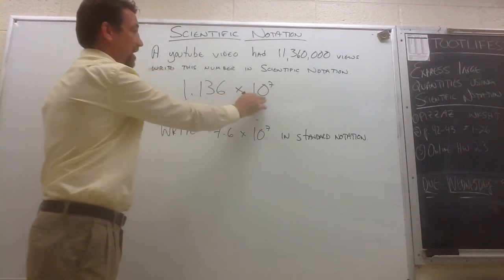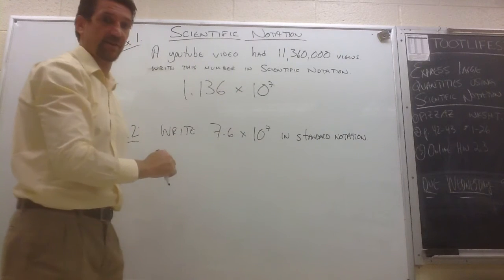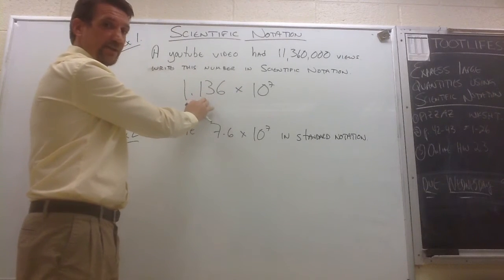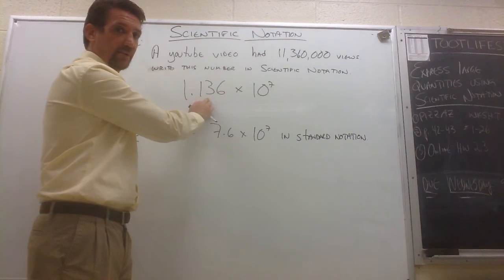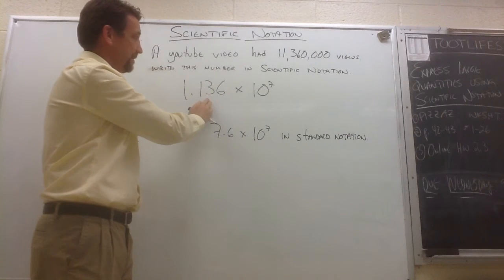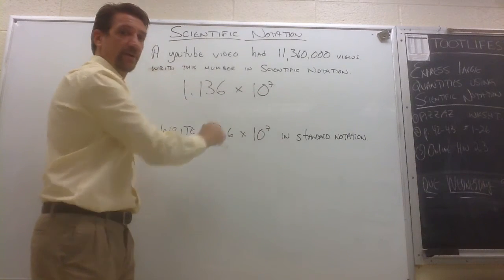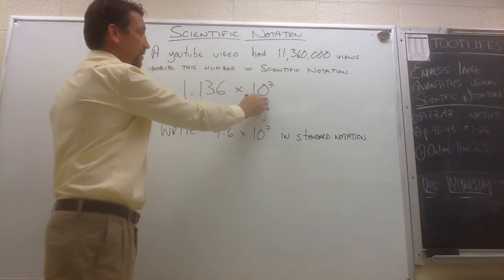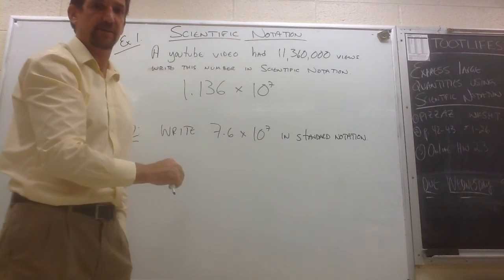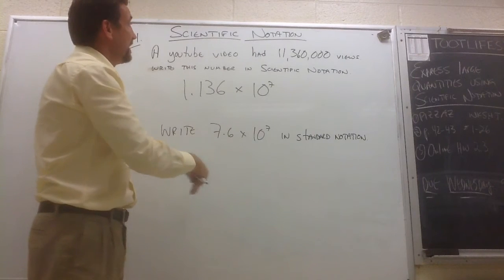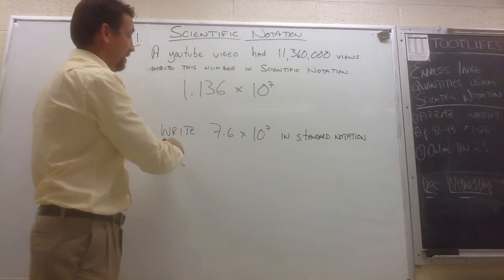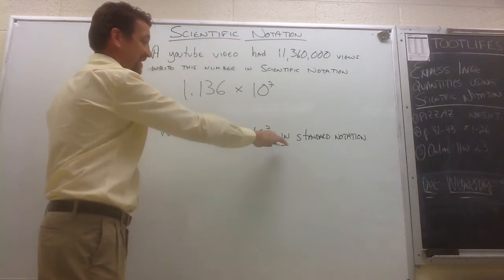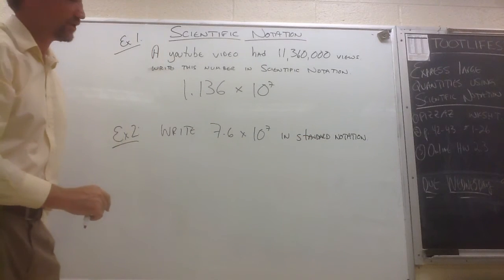You write it as a product of two factors. The first factor is always a number that is greater than or equal to 1 but less than 10. And the second number is always going to be a power of 10. And you determine that power by the number of places you moved your decimal. Okay? Now, we can also write numbers that are in scientific notation and write them in standard notation.